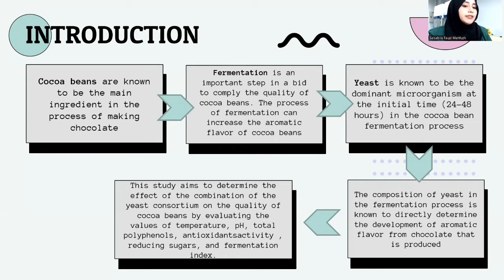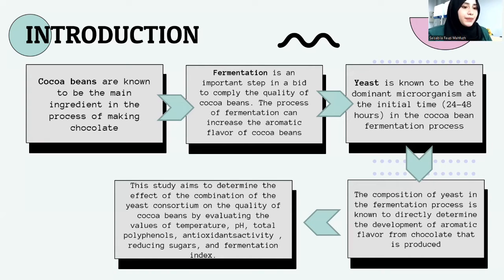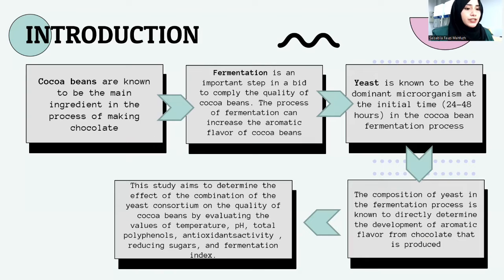Yeast is known to be the dominant microorganism at the initial stage of the cocoa beans fermentation process. In the fermentation process, yeast can utilize sugar in the pulp to produce ethanol, and with the help of enzymes, degrade pectin contained in the pulp. The protease activity produced by the yeast can also be responsible for producing the taste of cocoa beans. Several yeast species are commonly found in spontaneous fermentation and can be used as starter cultures.